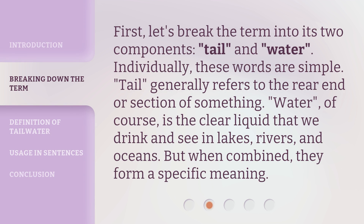First, let's break the term into its two components: tail and water. Individually, these words are simple. Tail generally refers to the rear end or section of something. Water, of course, is the clear liquid that we drink and see in lakes, rivers, and oceans. But when combined, they form a specific meaning.